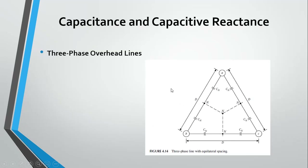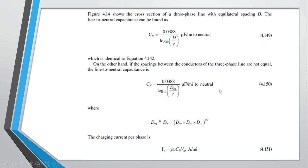In a three-phase overhead transmission line circuit, we have conductors A and B with a virtual neutral between them. The capacitance from A to neutral is C_N and from neutral to B is C_N; combining the two C_N values gives C_AB. For three phases, we must take the mean distance of all phases using D_AB, D_BC, and D_CA with a cube root — the same procedure as used for inductance.